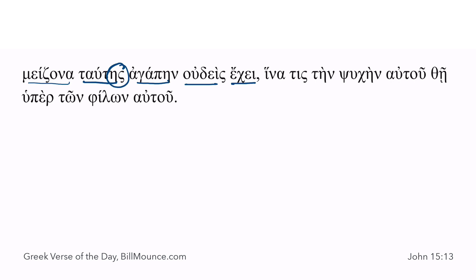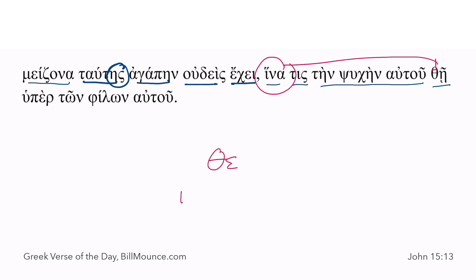Now we're going to see what the 'tautes' refers to: that someone, his life. You have a couple of hints — 'hina,' so you know it's a subjunctive. You memorize the root; in the present you get the reduplication and the lengthening. It's a mi-verb, but here you have just the root showing, so you know you're not in the present tense. It's a third-person singular aorist active subjunctive: in order that someone might place his life on behalf of his friends.